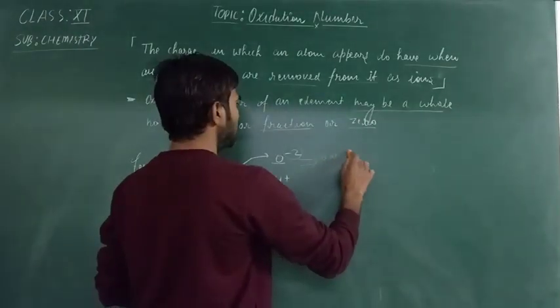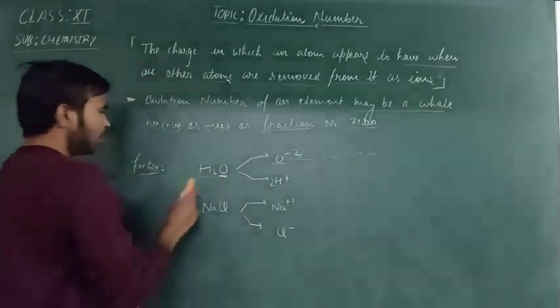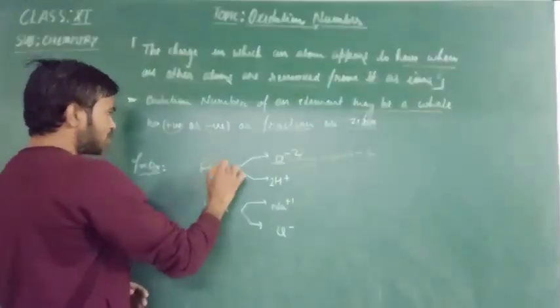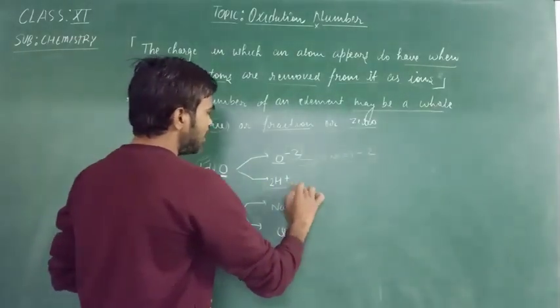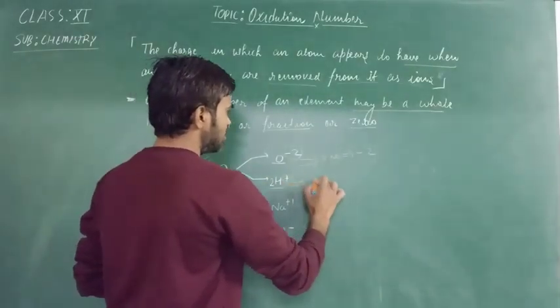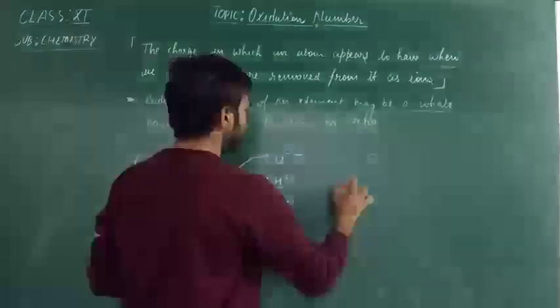And if we remove the Oxygen from the Hydrogen, then it ionizes as 2H positive, and here the charge is plus 1. It means the Oxidation number of Hydrogen will be plus 1.